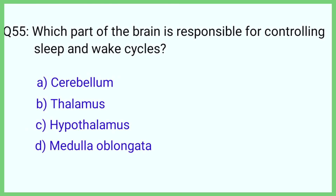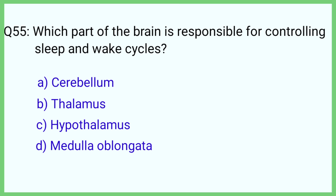Question number 55. Which part of the brain is responsible for controlling the sleep and wake cycle? The correct answer is option C: Hypothalamus.